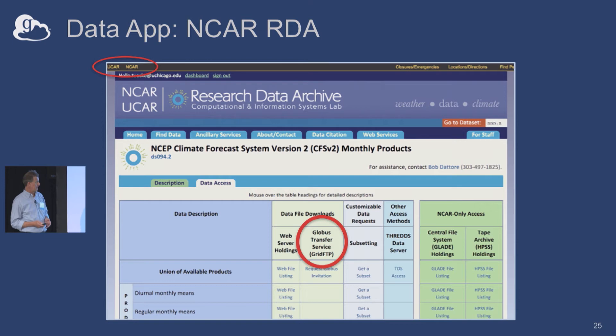A bit about what Globus sits on top of. We use standard storage connectors for POSIX file systems. We've also got premium storage connectors at extra cost: Amazon S3, Google Drive (in beta, announcing on Monday), Ceph, Spectrologic, HPSS, and a couple more in progress. Pretty much all your high-performance storage systems can be interfaced to.